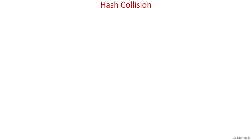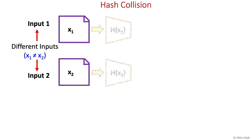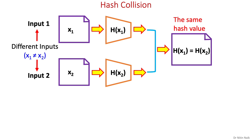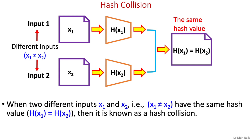Now let's discuss what a hash collision is. When two different inputs are processed by the same hash function and both generate the same hash value, it is called a hash collision. A hash collision occurs because a hash function takes a greater range of input values than the number of possible hash values, so there is a possibility that two different inputs may generate the same hash value due to the significantly lower number of hash values. For a good cryptographic hash function, it should be computationally infeasible to find a hash collision.